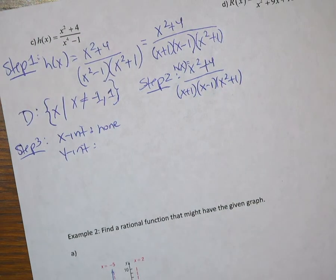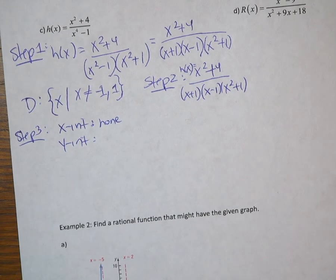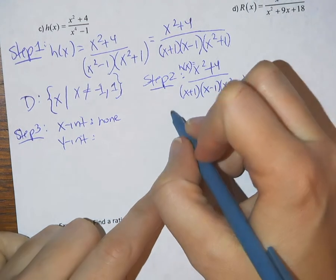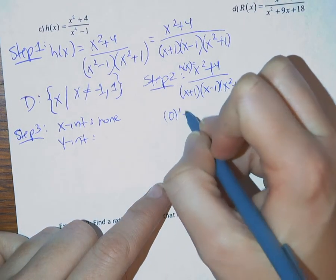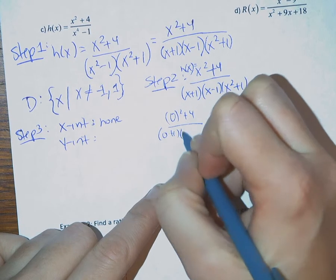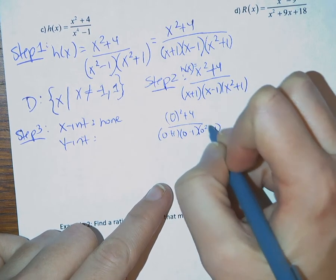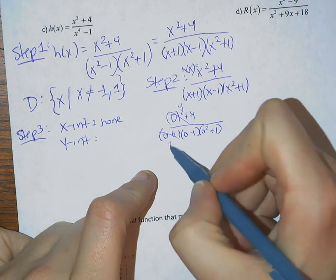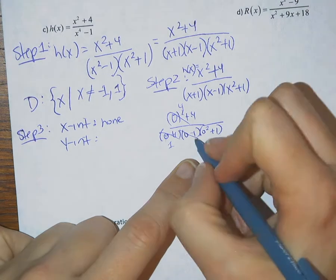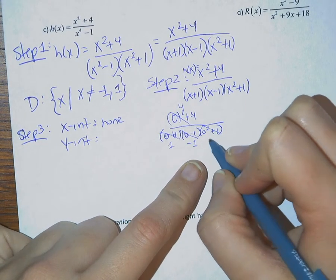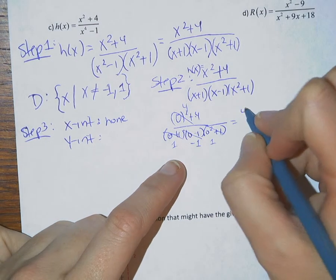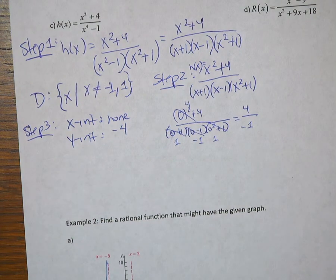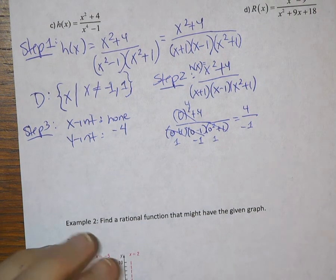Y intercepts we know are where x equals 0. In order to find this out we just need to plug in 0 for x. So I'm going to take this simplified form here, plug in 0 for x. So I have 0 squared plus 4 over 0 plus 1, 0 minus 1, 0 squared plus 1. 0 squared plus 4 is just 4, 0 plus 1, 0 minus 1, negative 1, 0 squared plus 1, positive 1, gives me a 4 over negative 1, which gives me a y intercept at negative 4. That's it for step 3.